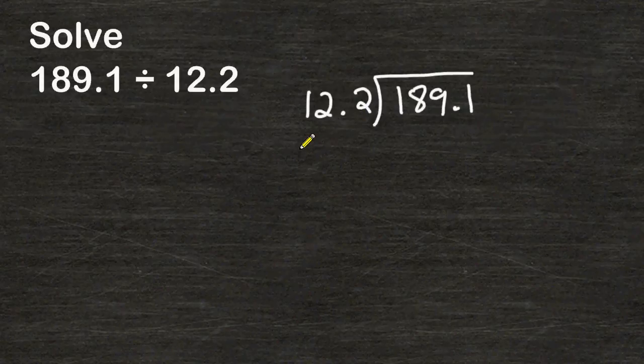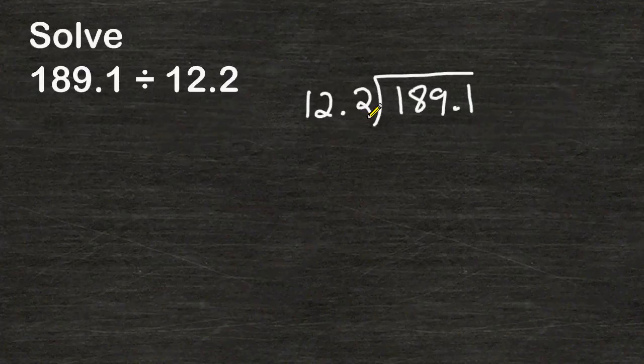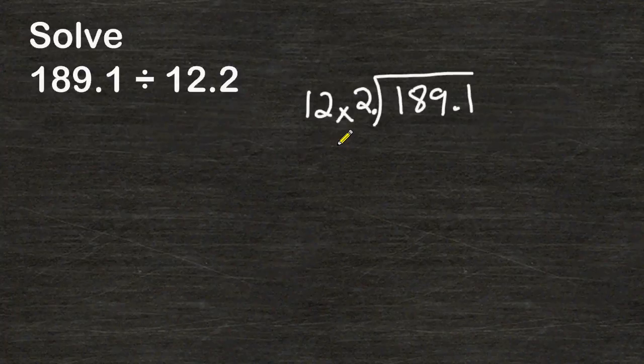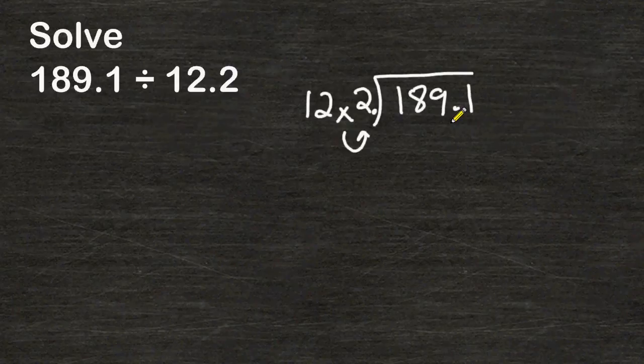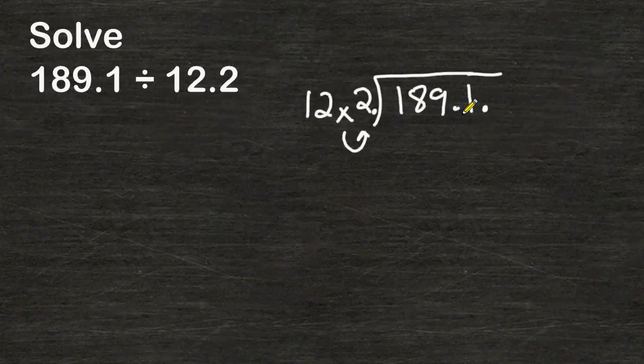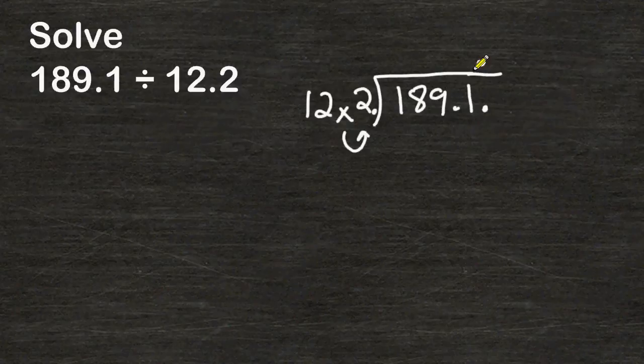If you ever have a decimal in your divisor you must take that decimal and move it all the way to the end of the number and that will turn that into a whole number. And because we jumped over one place value in the divisor we must do the same thing with the dividend. So we are going to move this decimal one place value over to the right. Now after moving that decimal over to the right you immediately move it up to the top and that's where your decimal is going to remain for your final answer.